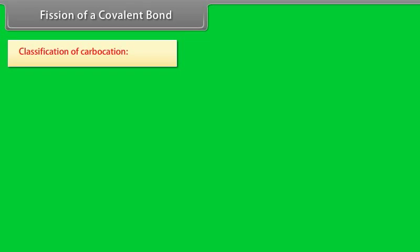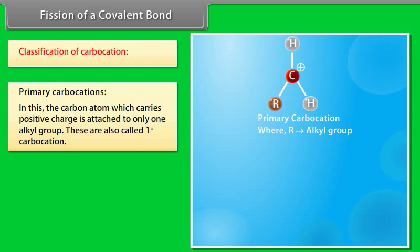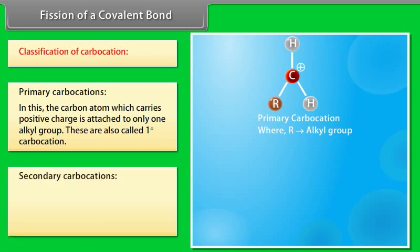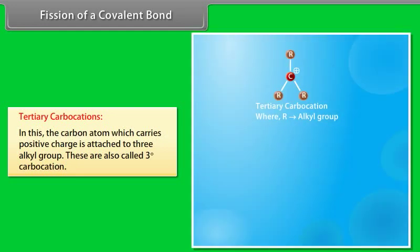Classification of carbocations: Primary carbocations — the carbon atom which carries positive charge is attached to only one alkyl group; also called first degree carbocations. Secondary carbocations — the carbon atom carrying positive charge is attached to two alkyl groups; also called second degree carbocations. Tertiary carbocations — the carbon atom carrying positive charge is attached to three alkyl groups; also called third degree carbocations.